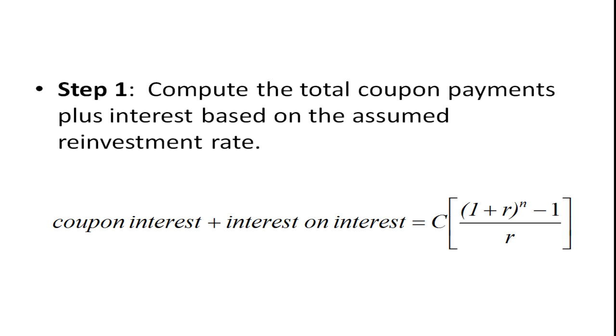Here are the steps. The first step is we need to compute the total coupon payments plus interest based on the assumed reinvestment rate. So basically the coupons represent an annuity. So if we calculate the future value of that annuity,